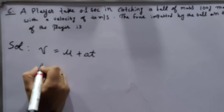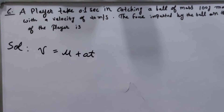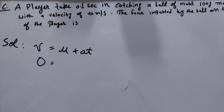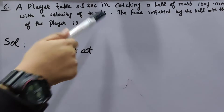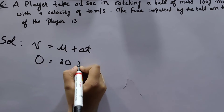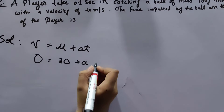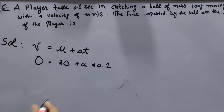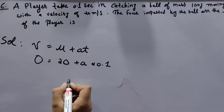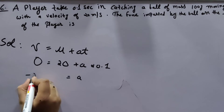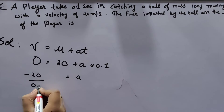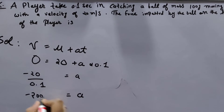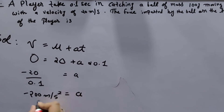V is our final velocity which is 0, because when you catch the ball the velocity of the ball becomes 0. U is the initial velocity which is 20 meters per second. A we don't know, and time is 0.1 seconds. So A is equal to minus 20 upon 0.1, and A is equal to minus 200 meters per second squared.